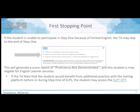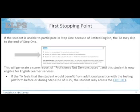At the first stopping point, if the student refuses or is unable to participate, the TA must go through to the end of step one for a student report to generate. On the final screen of step one, the TA selects 'student is a non-participant' and the test will not continue to step two — it will generate a report of proficiency not demonstrated, making that student eligible for English learner services. If the student is just uncomfortable, you can pause the test, practice with the OTT, and then resume the screener where they left off.